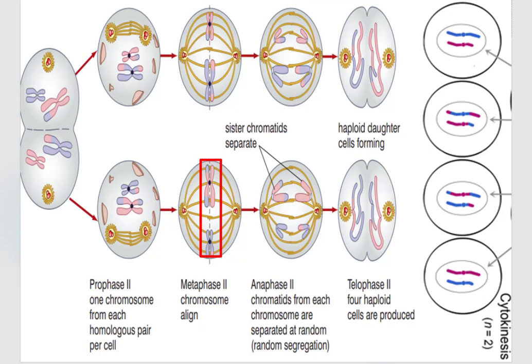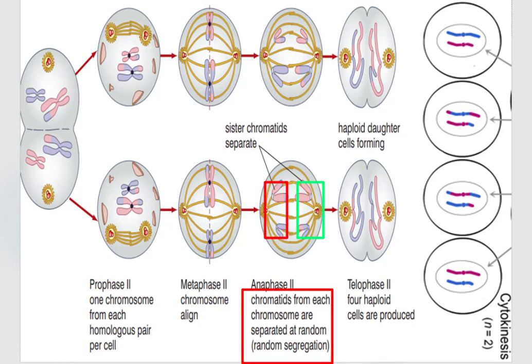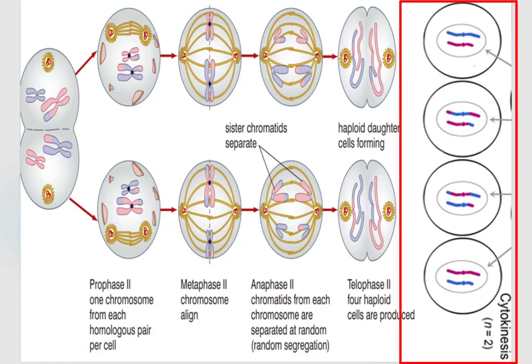In metaphase 2, chromosomes line up side by side. At anaphase 2, chromatids from each chromosome are separated due to contraction and shortening of spindle fibers, and the chromatids move to opposite directions. At telophase 2, the nuclear membrane appears and cleavage furrows develop to separate the cytoplasmic contents equally to each daughter cell. Finally, at cytokinesis 2, we acquire four daughter cells that contain half the number of chromosomes of the parental or original cell.